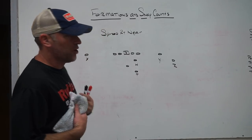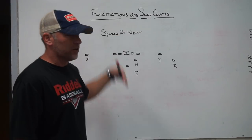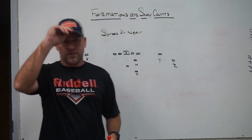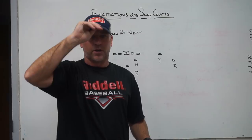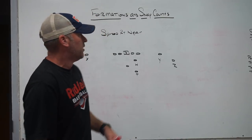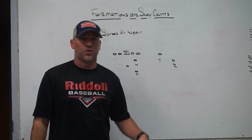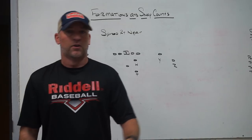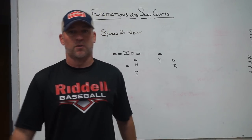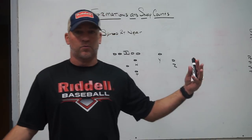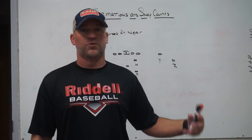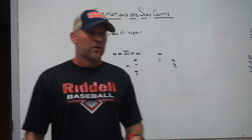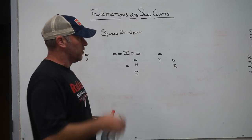Any formation for us that has 'right' or 'left' in it, we're going to snap the ball on one. Our cadence is 'down, set, hut' — we snap on one. So the kids know from day one: if we say spread right, spread left, trips right, trips left, deuce right, deuce left, ace right, ace left, Brooklyn right, Brooklyn left, jumbo right, jumbo left, techs right, techs left — if the formation has 'right' or 'left,' we snap on one.